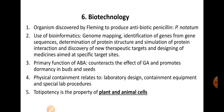In the biotechnology section, five questions: (1) The organism discovered by Fleming to produce the antibiotic penicillin is Penicillium notatum. (2) Bioinformatics is used for genome mapping, identification of genes from gene sequences, determination of protein structure and simulation of protein interaction, discovery of new therapeutic targets, and designing medicines aimed at specific target sites. Bioinformatics involves working with large amounts of lab data — performing comparisons, permutations, and combinations on the data, not directly working in the lab.